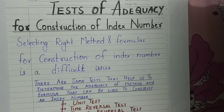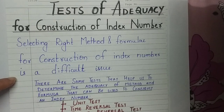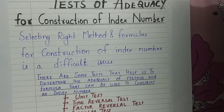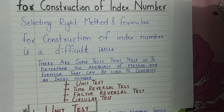The topic for today is tests of adequacy for the construction of index numbers. In previous videos, we discussed several formulas for constructing both simple and weighted index numbers. Now, selecting the right method and formula for the construction of an index number is a difficult issue. There are four tests that can be used to decide which method or formula is to be used: unit test, time reversal test, factor reversal test, and circular test.